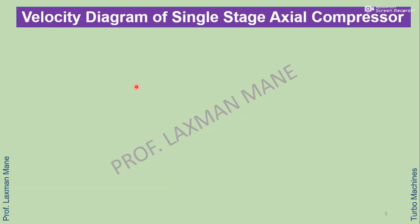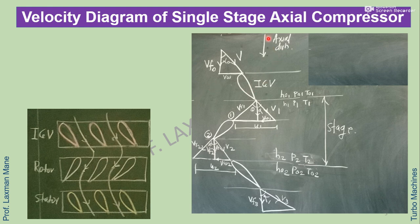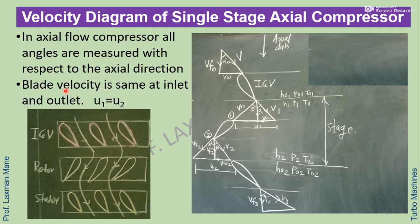Velocity diagram of a single stage axial compressor. Here is a set of Inlet Guide Vanes, Rotor Blades, and Stator Blades. Air is passing in a vertical fashion. The velocity triangle diagram shows the direction of air flow, which is axial. In an Axial Flow Compressor, all angles are measured with respect to axial direction. The blade velocity is the same at inlet and outlet, meaning U1 equals U2. This is the IGV, this is the Rotor Blade, and this is the Stator Blade — forming one stage.